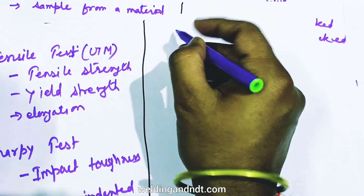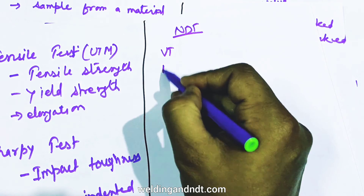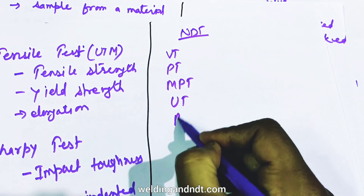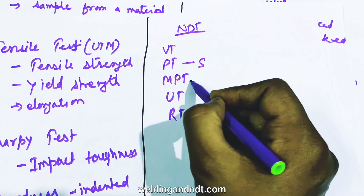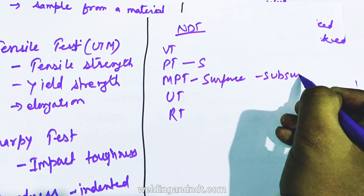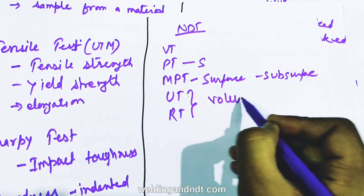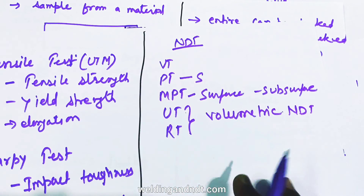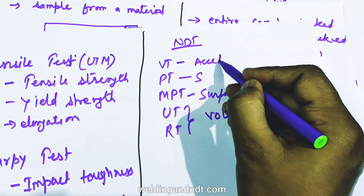Some NDT methods include: visual testing (VT) by human eye, penetrant testing (PT), magnetic particle testing (MPT), ultrasonic testing (UT), and radiographic testing (RT). PT can check the surface; MPT can check the surface as well as subsurface. UT and RT can check the entire volume — hence they are called volumetric NDE. VT checks accessible regions by human eye.